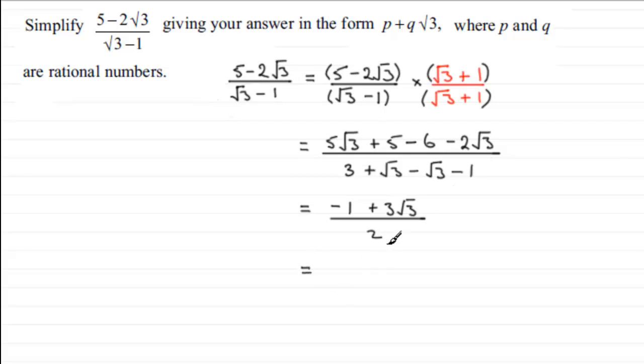And, finally, if we divide each of these two terms now by 2, we get minus 1 half. And then we have plus 3 over 2 root 3. And you can see that this is expressed now in this form, P plus Q root 3.